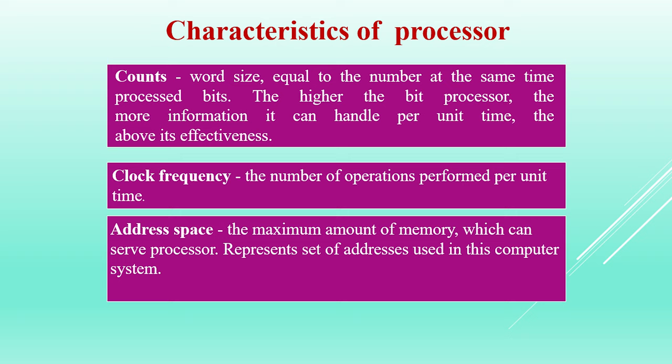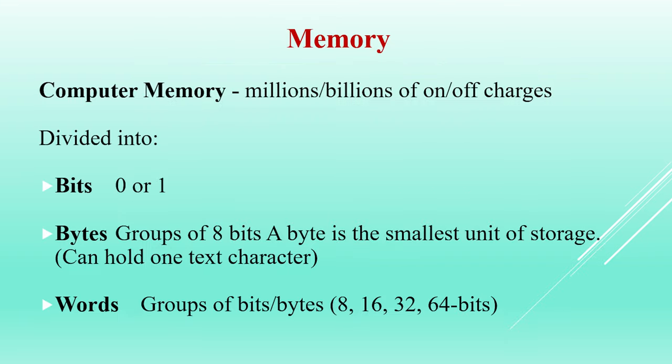The system bus consists of the control bus, which puts processor read and write signals to check all devices whether or not their address matches. The address bus exposes the information about the memory address. The control bus carries read and write signals.